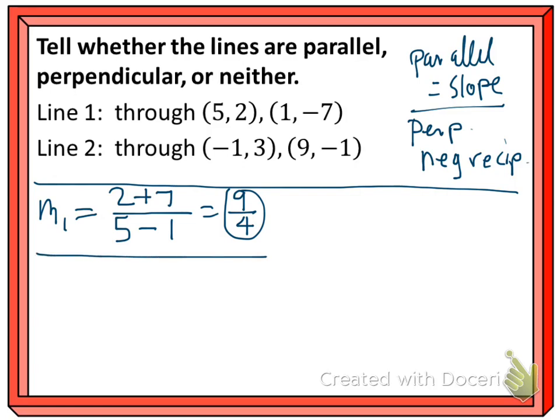Let's look at line 2. On top, 3 minus a negative, so plus 1, over negative 1 minus 9 on the bottom in the same order. Reducing, I've got 4 over negative 10. Bring that negative out front and reduce the fraction: negative 2/5.